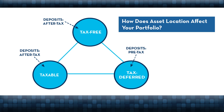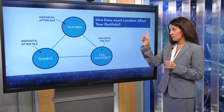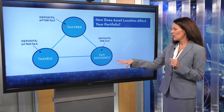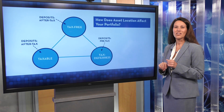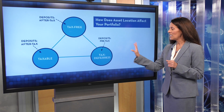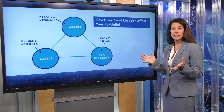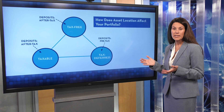The Roth accounts grow tax-free, and withdrawals come out completely tax-free. The taxable pool — growth on that account, as long as you've held your assets for at least a year, is subject to long-term capital gains tax, which is not as good as free but typically better than ordinary income. That's what the tax-deferred pool is subject to. Any withdrawals from your IRAs, 401ks, etc. are going to be subject to the highest tax rates — ordinary income rates.